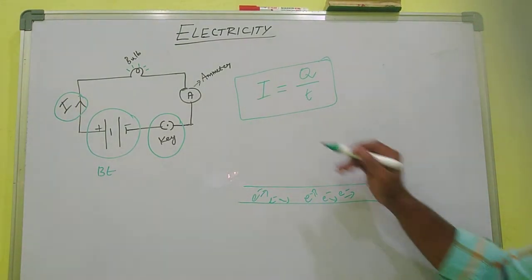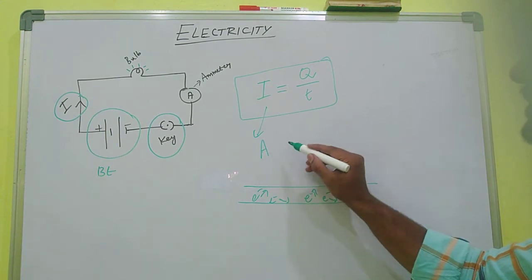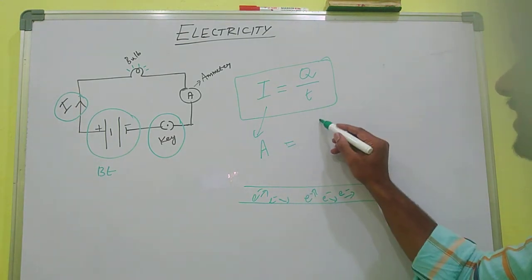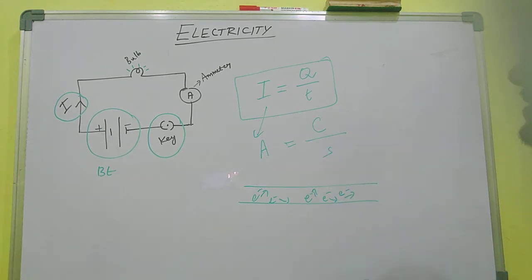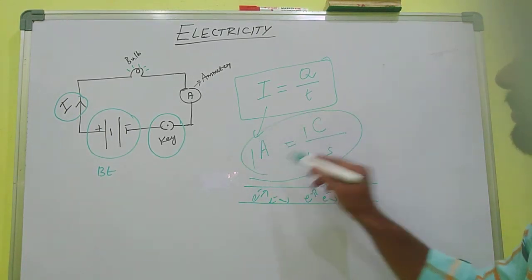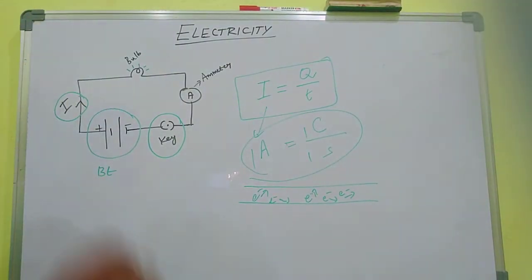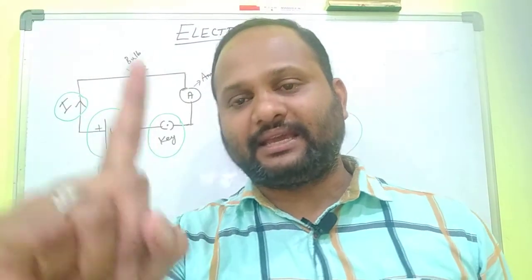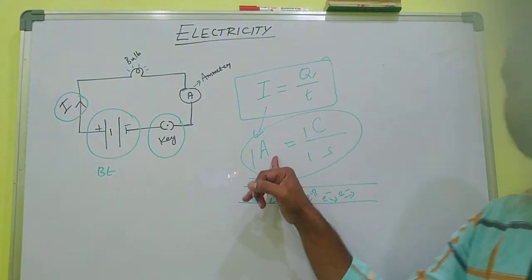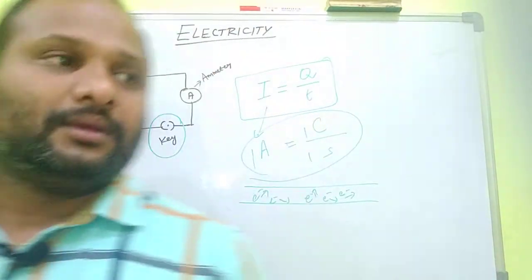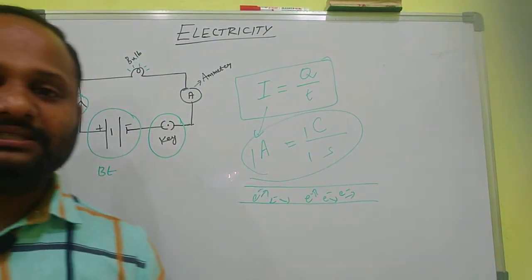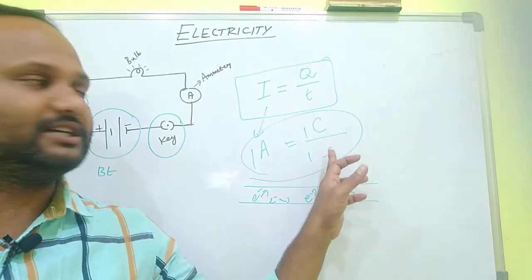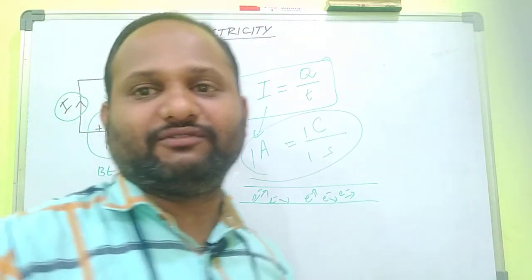The unit of electric current is ampere, named after the scientist Ampere, represented by the symbol capital A. The unit of charge is coulomb, and the unit of time is second. One ampere equals one coulomb per one second. That means: when one coulomb of net charge flows across any cross-sectional area of a conductor in a time period of one second, it constitutes one ampere of current. That is the definition of one ampere.